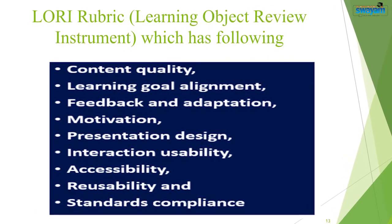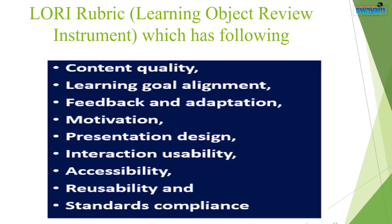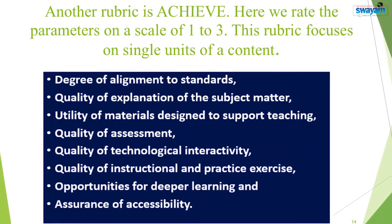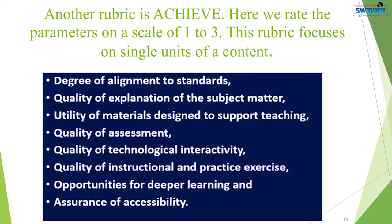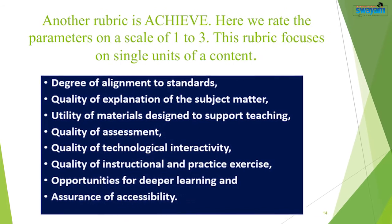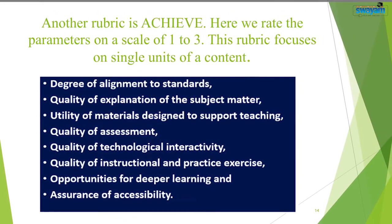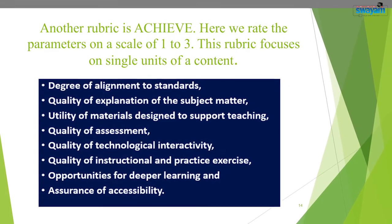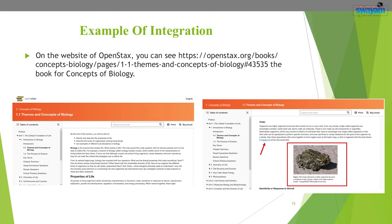Another rubric is ACHIEVE, which rates parameters on a scale of one to three. The good point about this rubric is that it focuses on single units of content. After this, let us see an example of integration of content in an open course — this is the website of OpenStax.